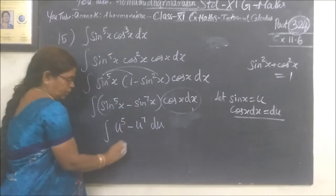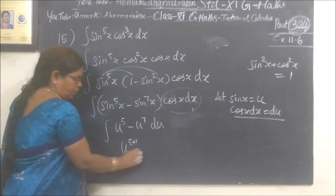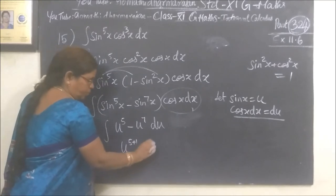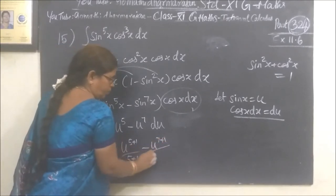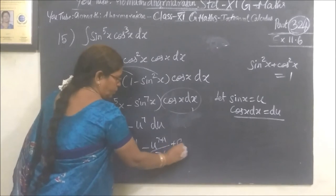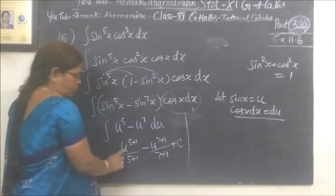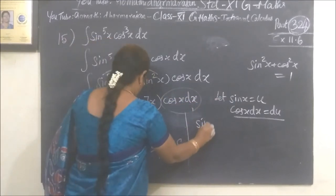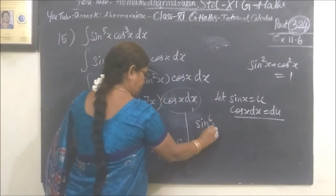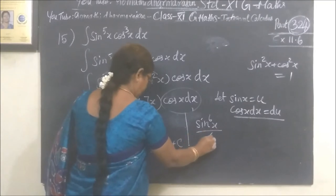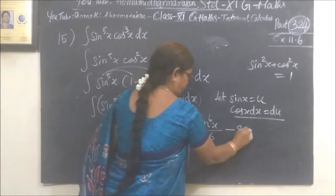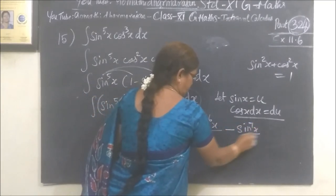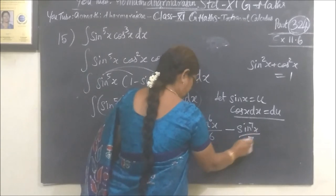If you want to make this work, u power 5 plus 1 by 5 plus 1, then 7 plus 1 by 7 plus 1. When you substitute back, sin x. So sin power 6 x by 6 minus sin power 8 by 7. That is 7 plus 1.